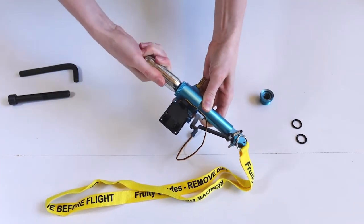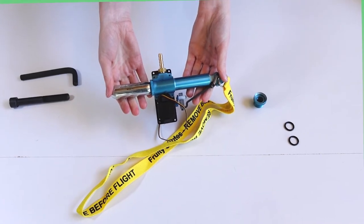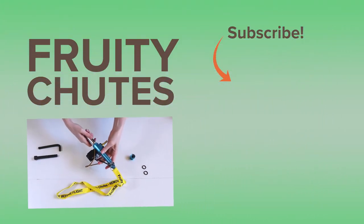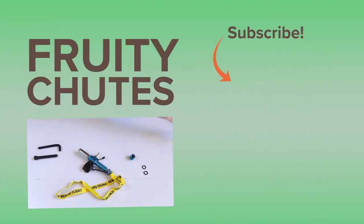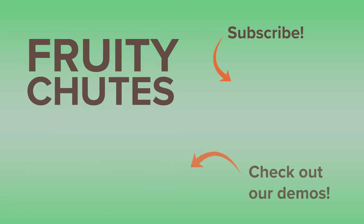Now your Hawk CO2 release is ready for use. Check out our other Fruity Shoots tutorials and demos and visit FruityShoots.com to learn more about our other devices and parachute products.